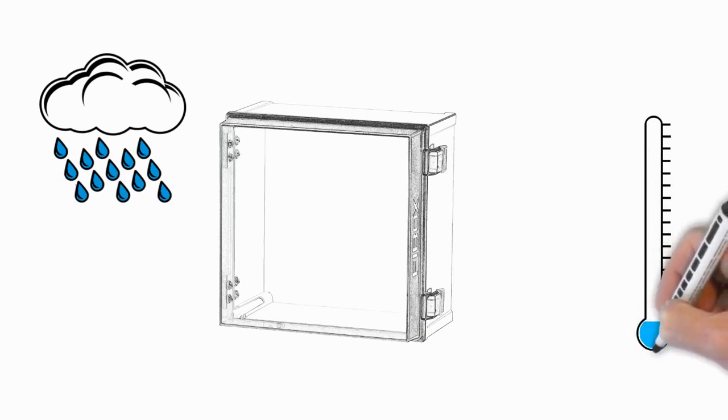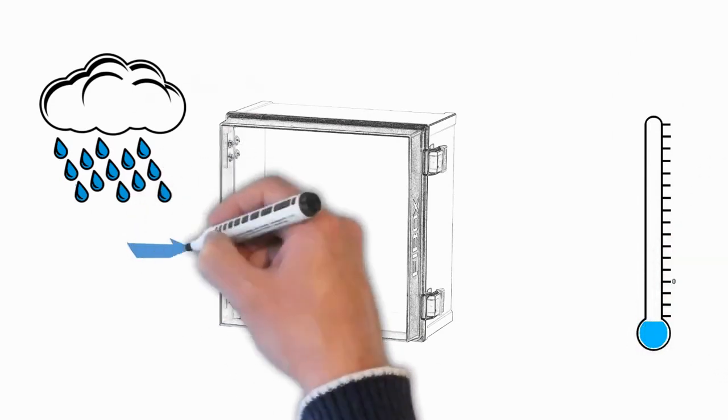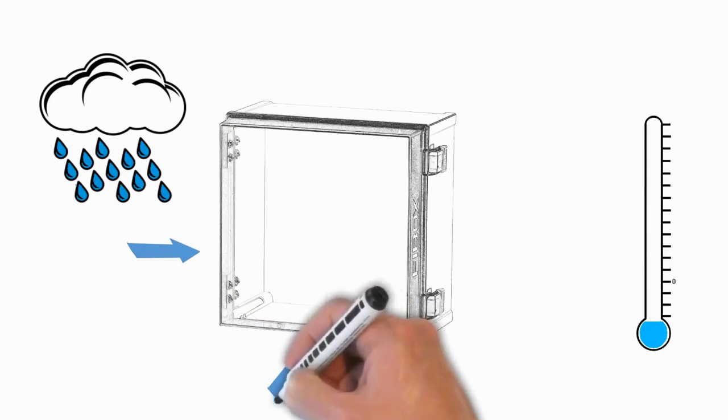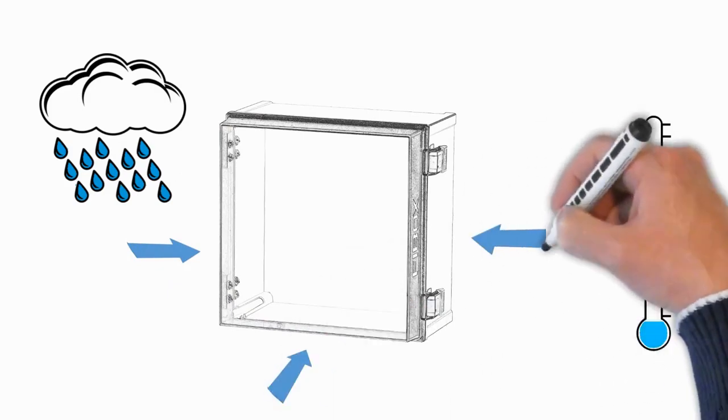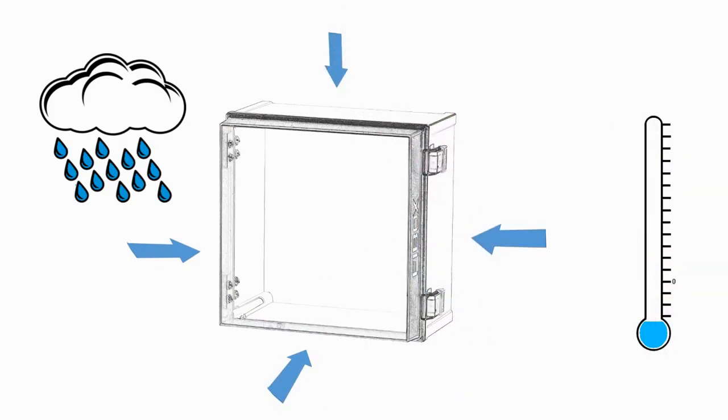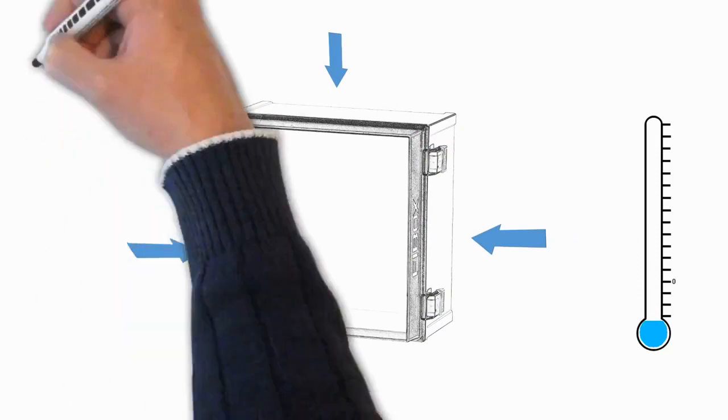That said, changes in temperature or altitude may cause a pressure difference in your product's internal atmosphere, the air inside the enclosure. This increased pressure can place stress on the enclosure's seals and may impact the ingress protection of your box.